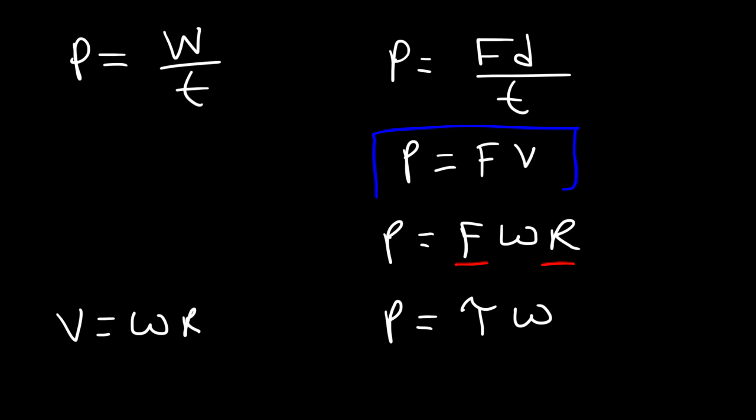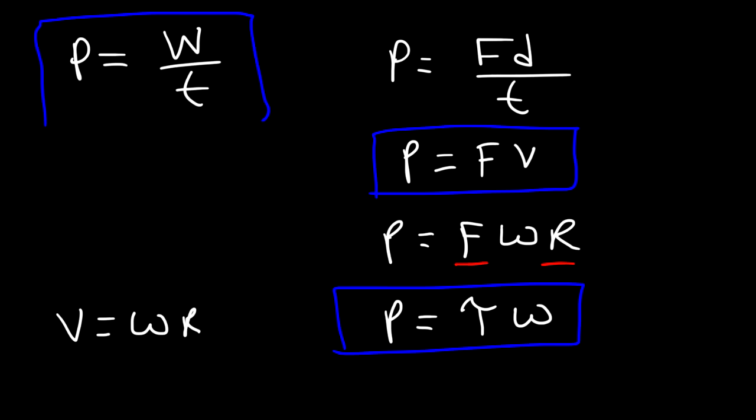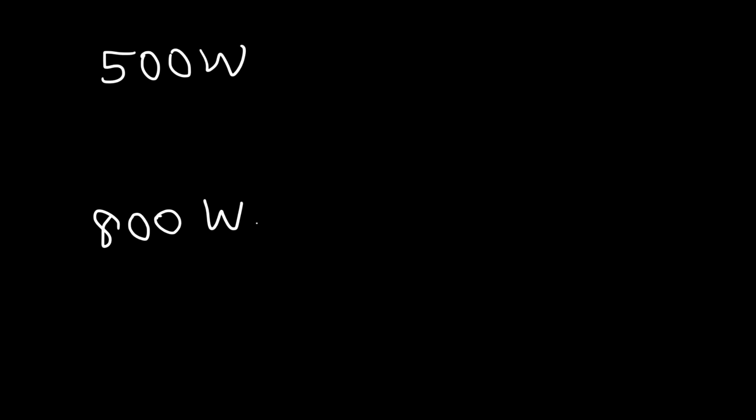You have different ways in which you can calculate the power acting on the system. Keep in mind, power is measured in watts. Power tells you the rate at which energy is transferred. So if you have a 500 watt motor, that means this motor can convert 500 joules of electrical energy into mechanical energy every second. If you have an 800 watt motor, every second 800 joules of electrical energy can be converted to mechanical energy. One watt is one joule of energy transferred every second.